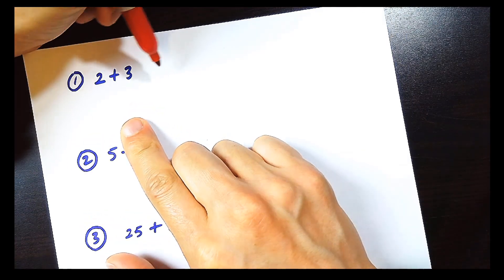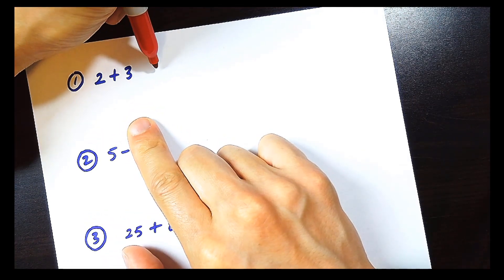What is 2 plus 3? We're simply going to add this. 2 plus 3 is 5.